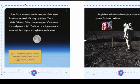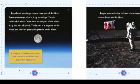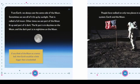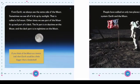If you think of the moon as a tennis ball, then Earth would be a little bigger than a basketball. People have walked on only two places in our solar system: Earth and the moon.